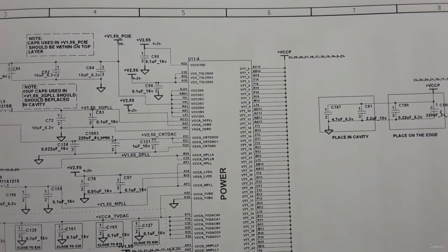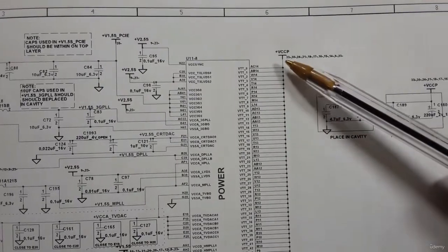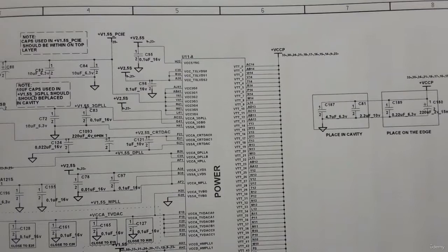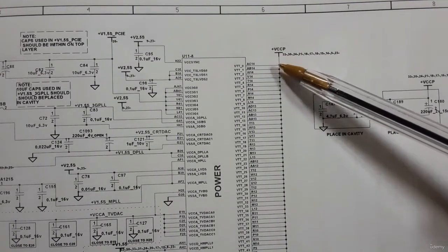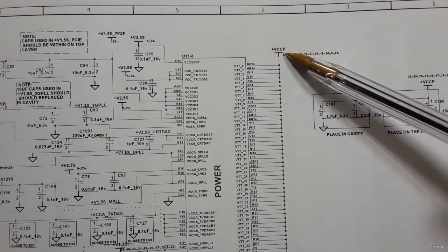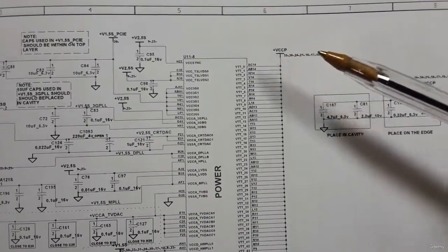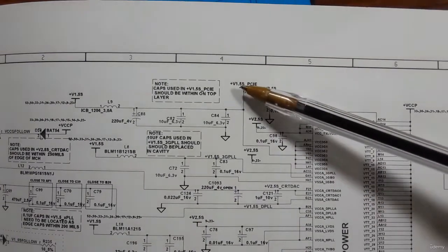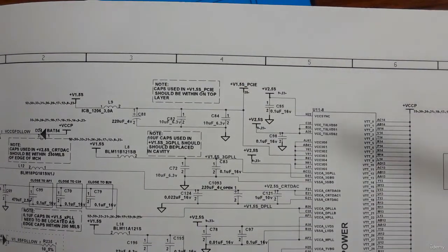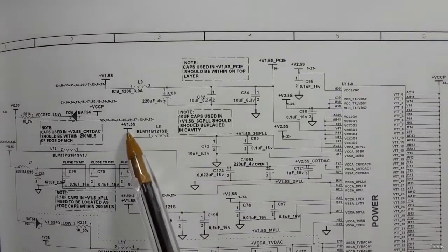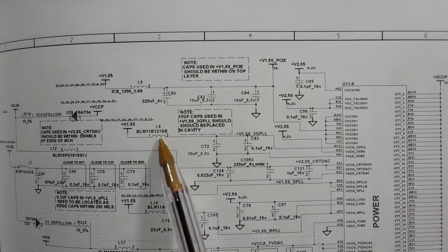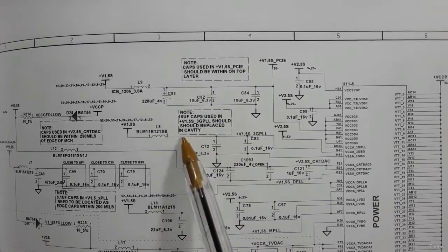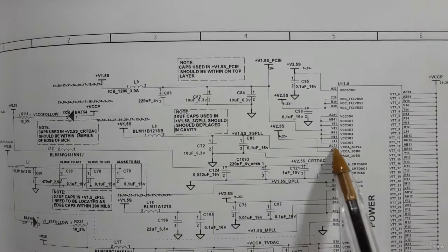The GMCH has many voltages: plus VCCP equal to 1.05 volts, 2.5 volts, and 1.5 volts. The 1.5 volts is passed through a coil and through capacitors — whenever you find a coil with capacitors, it means filtering. Then it goes to the pin.